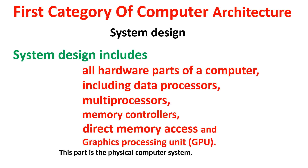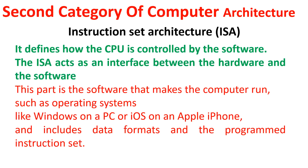The first category is system design. It includes all hardware parts of a computer, including data processors, multiprocessors, memory controllers, direct memory access, and graphics processing unit. So it has hardware parts as well as software parts.